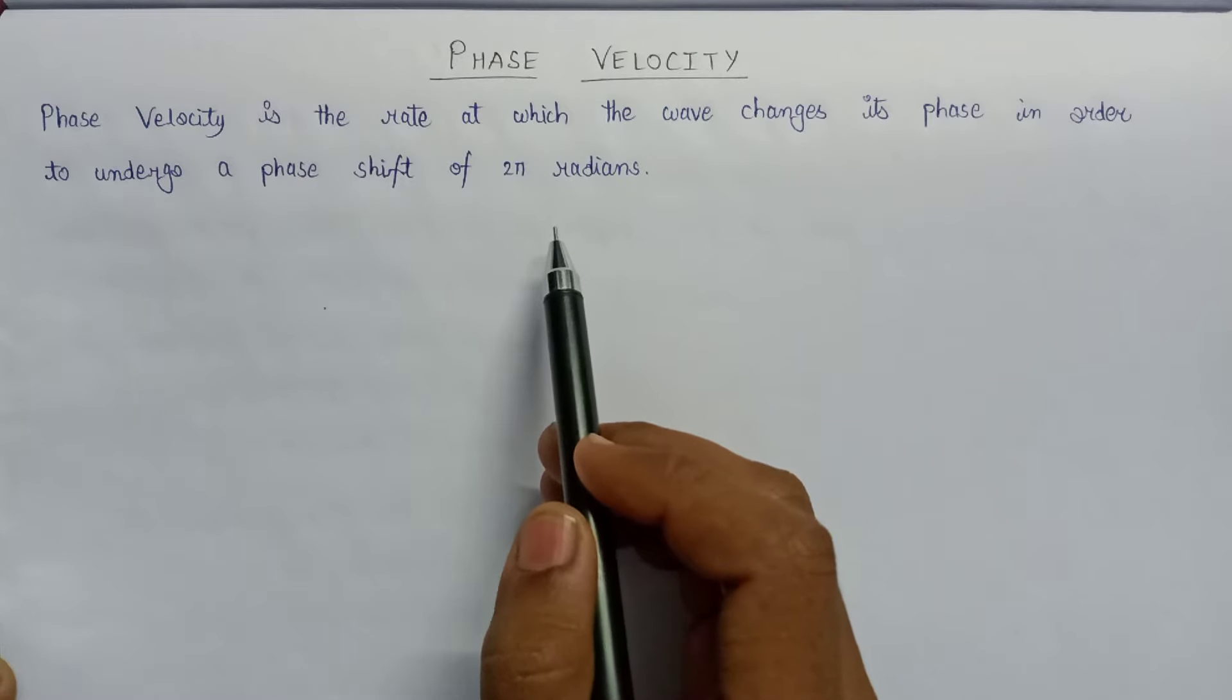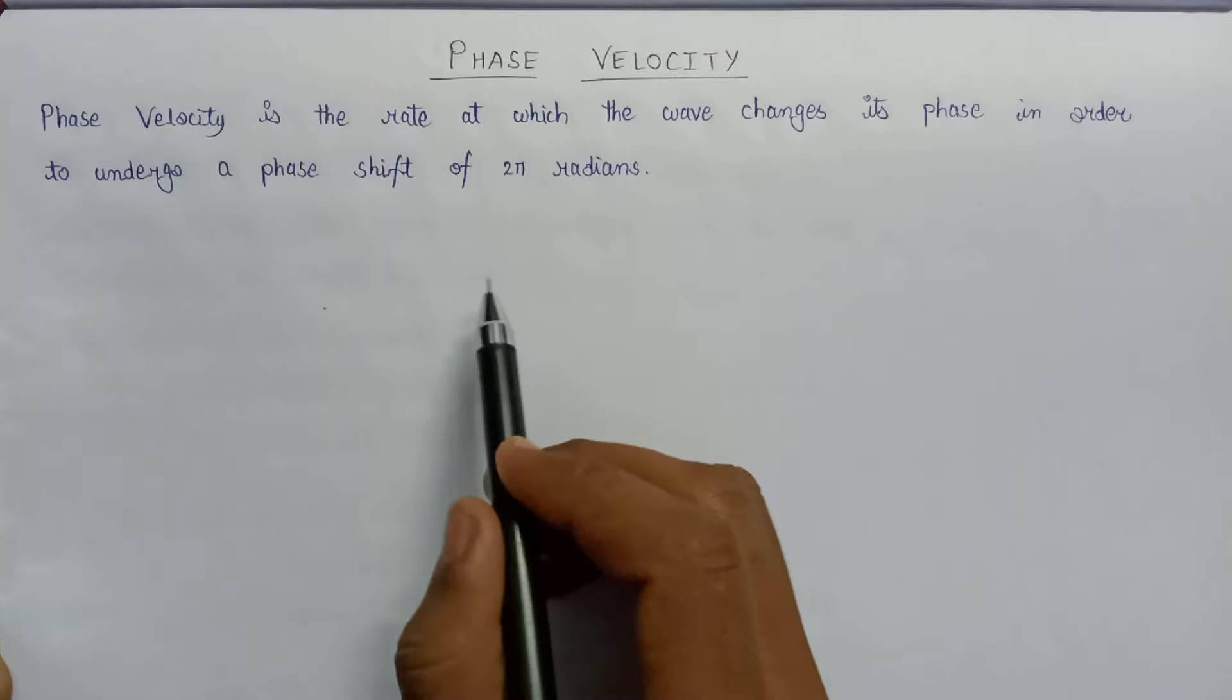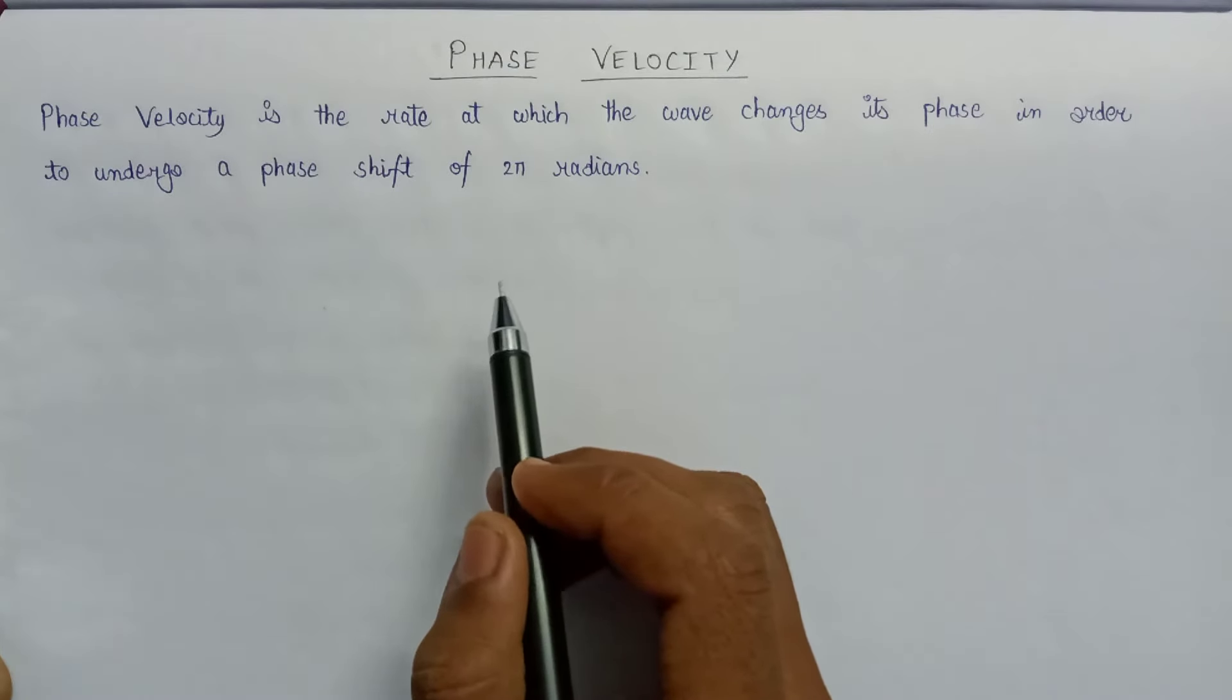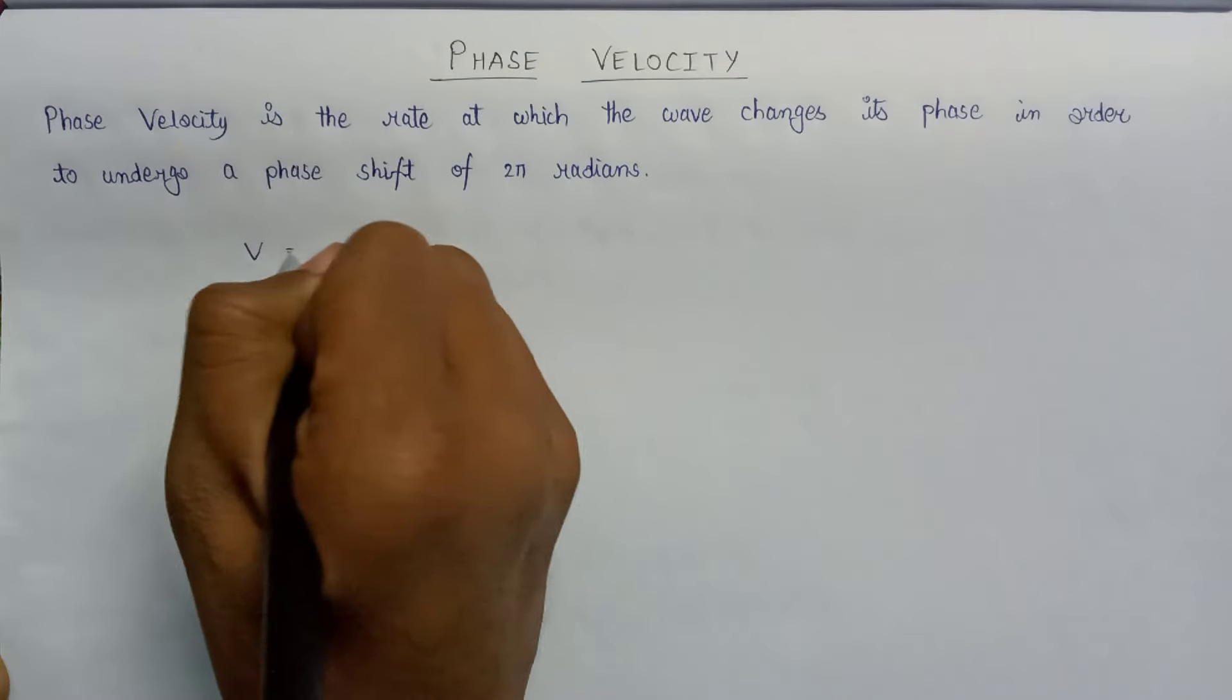Let us have a look at the derivation for the equation of phase velocity. According to the definition, the rate of phase change at 2π radians is to be considered. So the phase velocity will be equal to λ/t.